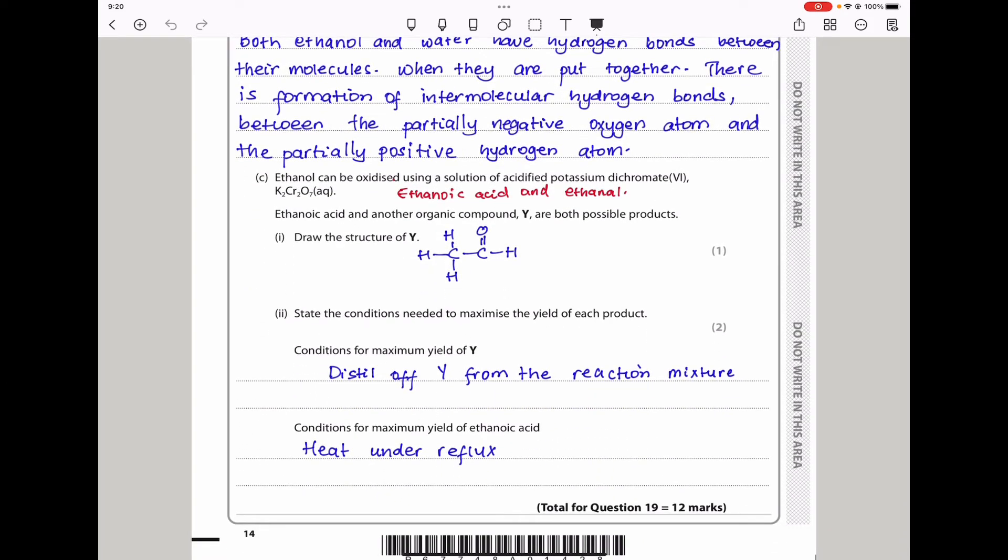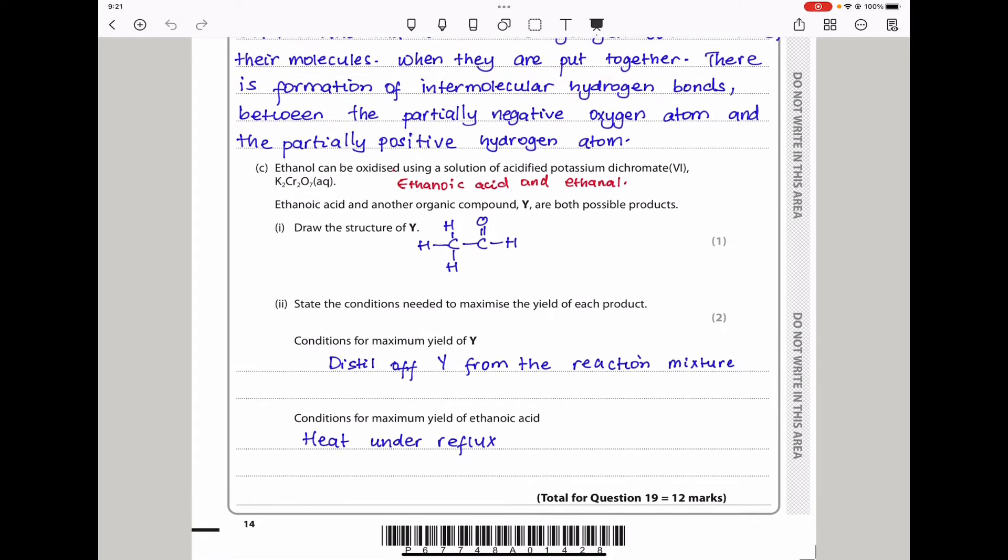Ethanol can be oxidized using a solution of acidified potassium dichromate(VI). Ethanoic acid and another organic compound Y are both possible products. They want you to draw the structure of Y. If you mix ethanol with acidified potassium dichromate, you're going to produce ethanoic acid, but there is a possibility of production of an aldehyde. So the other compound should be an aldehyde, which is going to be ethanal.